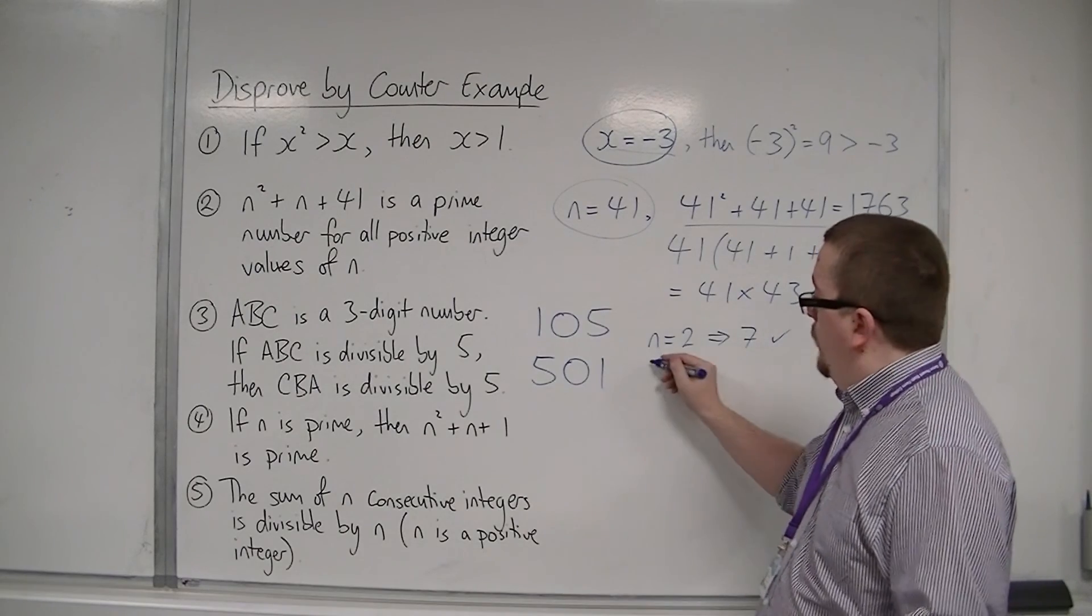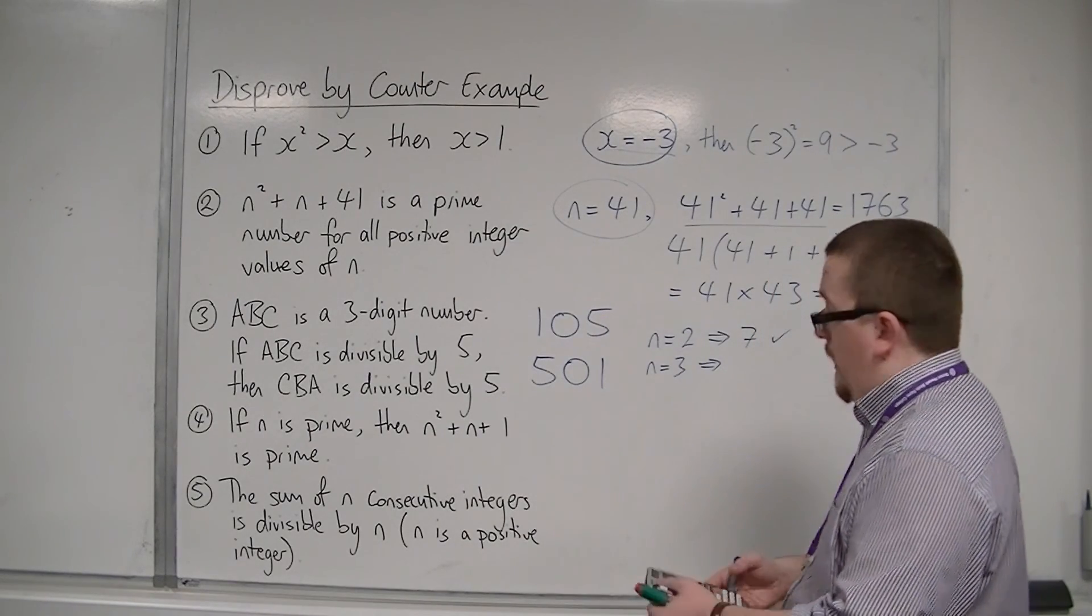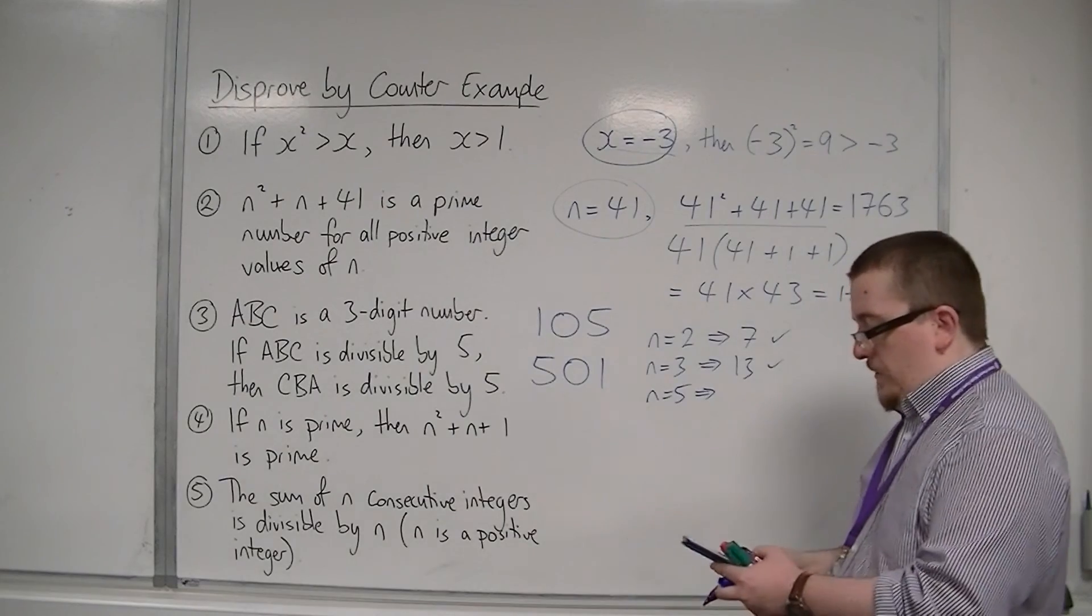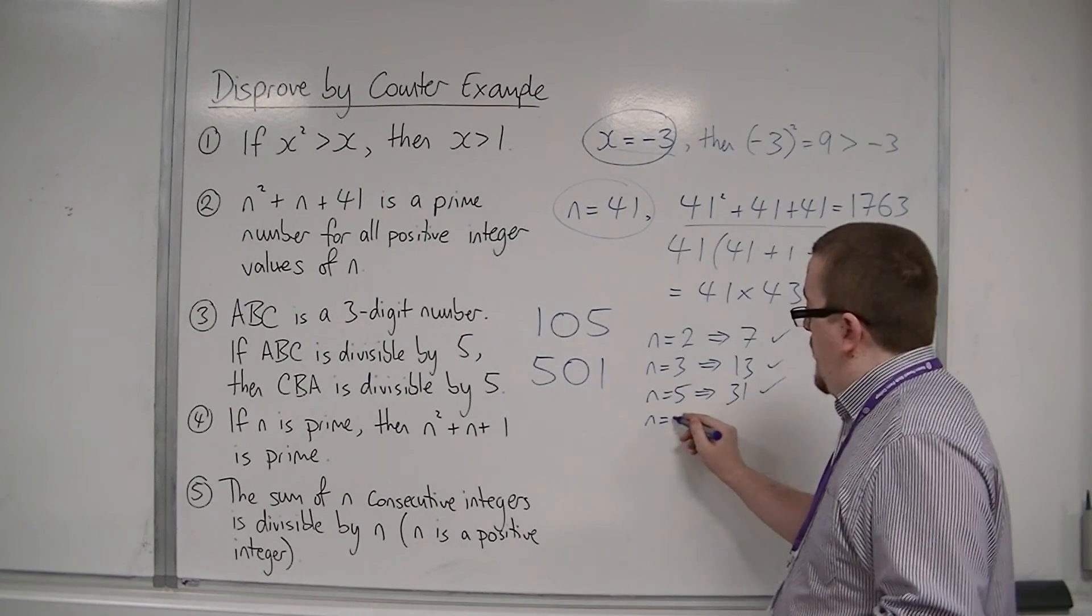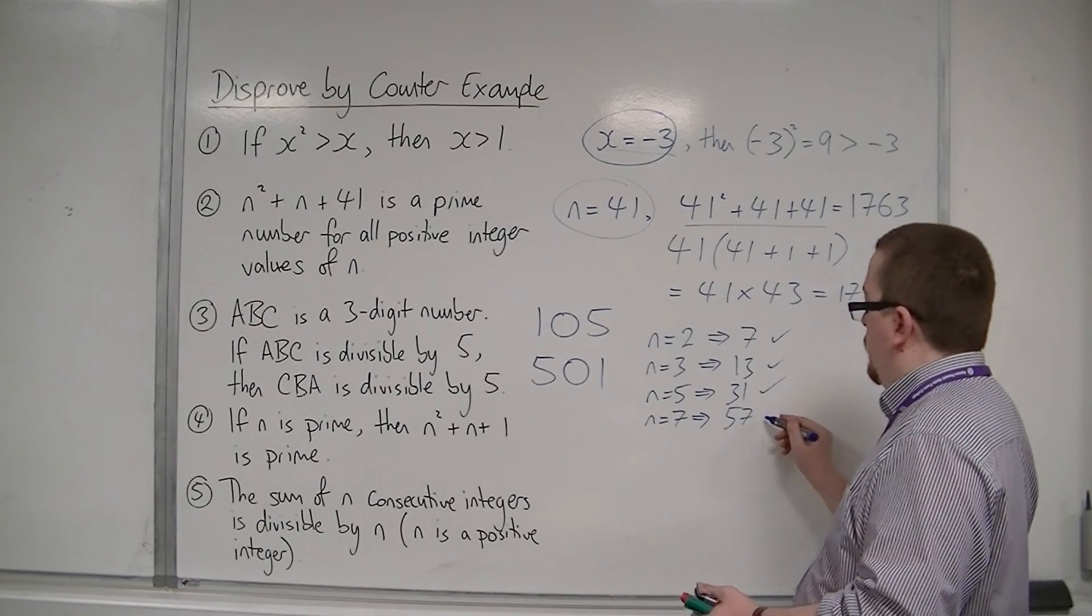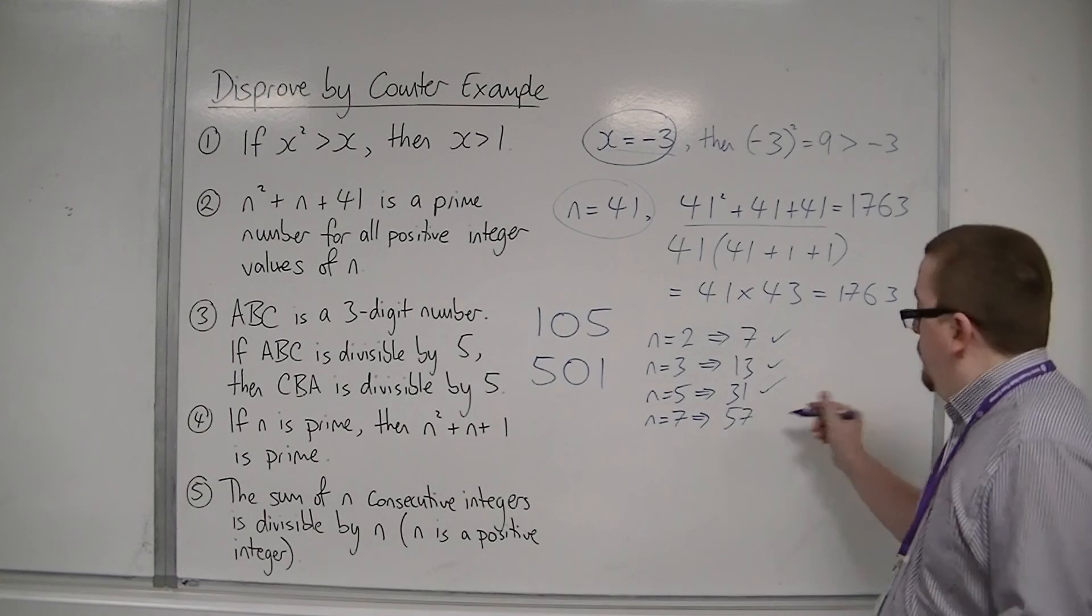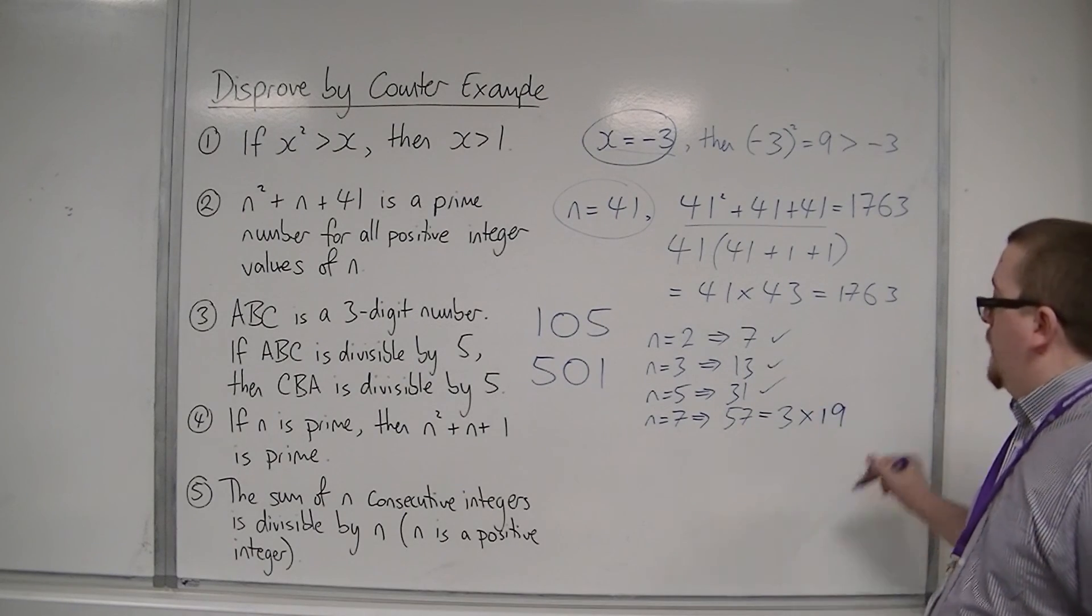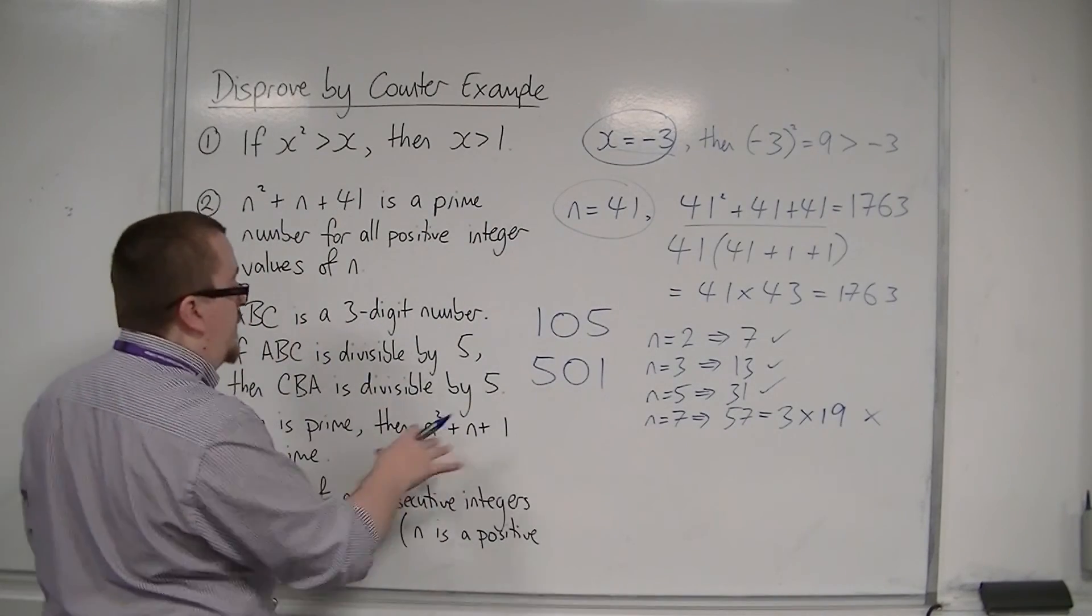So we're going to have to try n is 3. So we get 3 squared plus 3 plus 1, and that's 13. That's prime. So the next prime number is 5. Let's try 5. So 5 squared plus 5 plus 1 is 31. That's prime. Then n is 7. So 7 squared plus 7 plus 1 is 57. And 57, that's not prime. So 57 could be divided by 3, 19 times. So 57 is not prime. So we've found an example, n is 7, where this doesn't work.